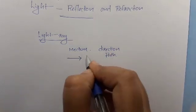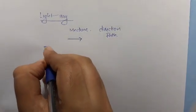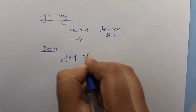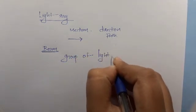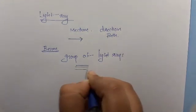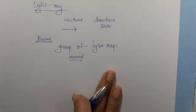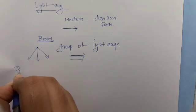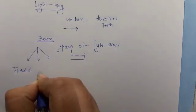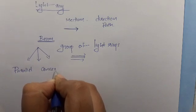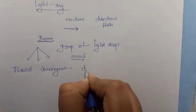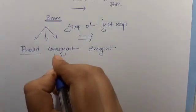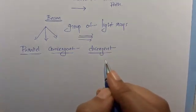A group of light rays is called a beam of light. A beam of light is a group of light rays. A beam of light can be of three types: the first one is parallel, the second one is convergent, and the third one is divergent.